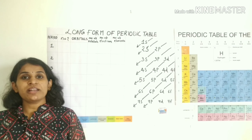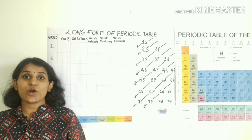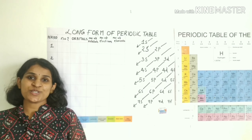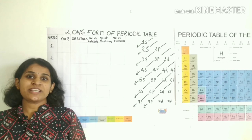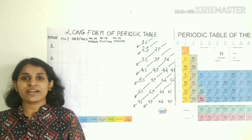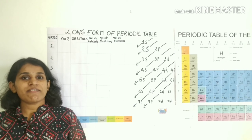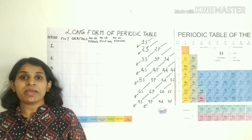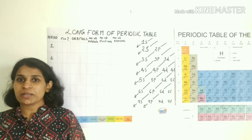In the periodic table, we have horizontal rows and vertical columns. We call horizontal rows periods and vertical columns groups. There are 7 periods and 18 groups in the periodic table.